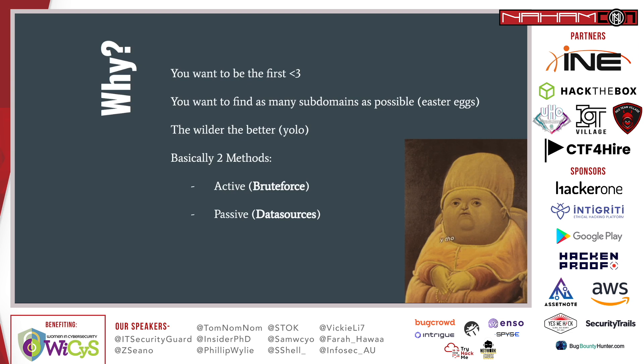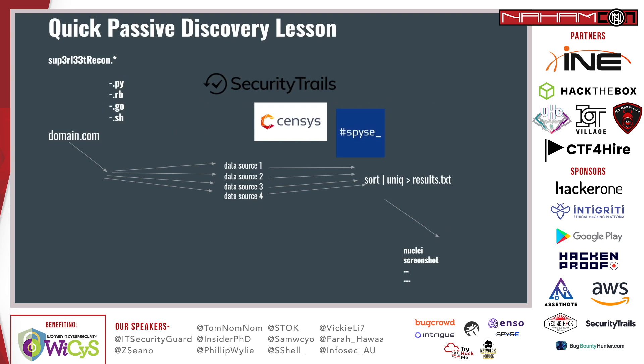Let me quickly explain what passive discovery is and how it works. You have companies like SecurityTrails, Censys, and Spyse who collect data from companies day in and day out. They store it all and provide it to big corporations. The big corporations use this data to map their attack surface. As you can already tell, this is also pretty handy for bug bounty hunters because what we want to do is get an overview of what the company actually owns.